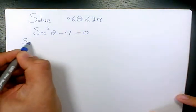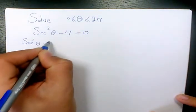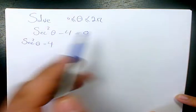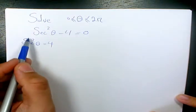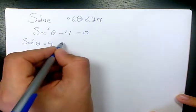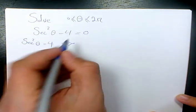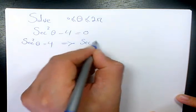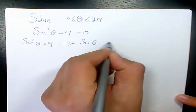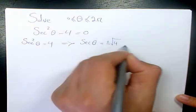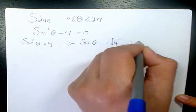First thing I'm going to do, I'm going to have secant squared theta equals to 4 by moving negative 4 to the right hand side. Then I can say secant, if I have the square root of both sides, it's going to be plus minus square root of 4. That will be plus minus 2.